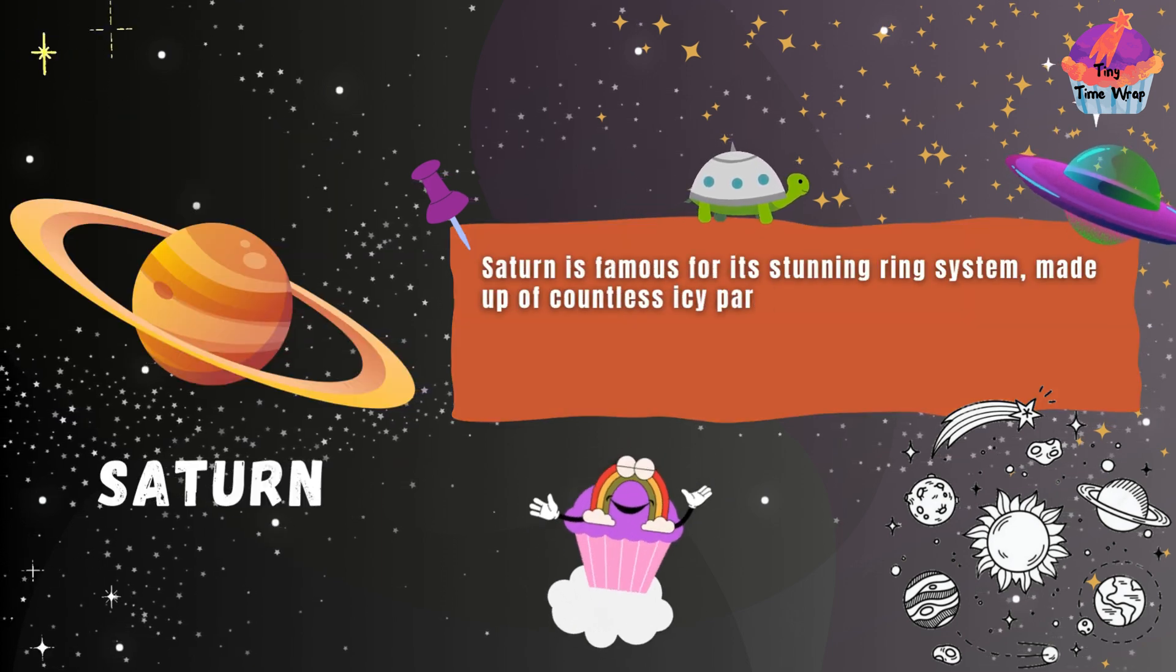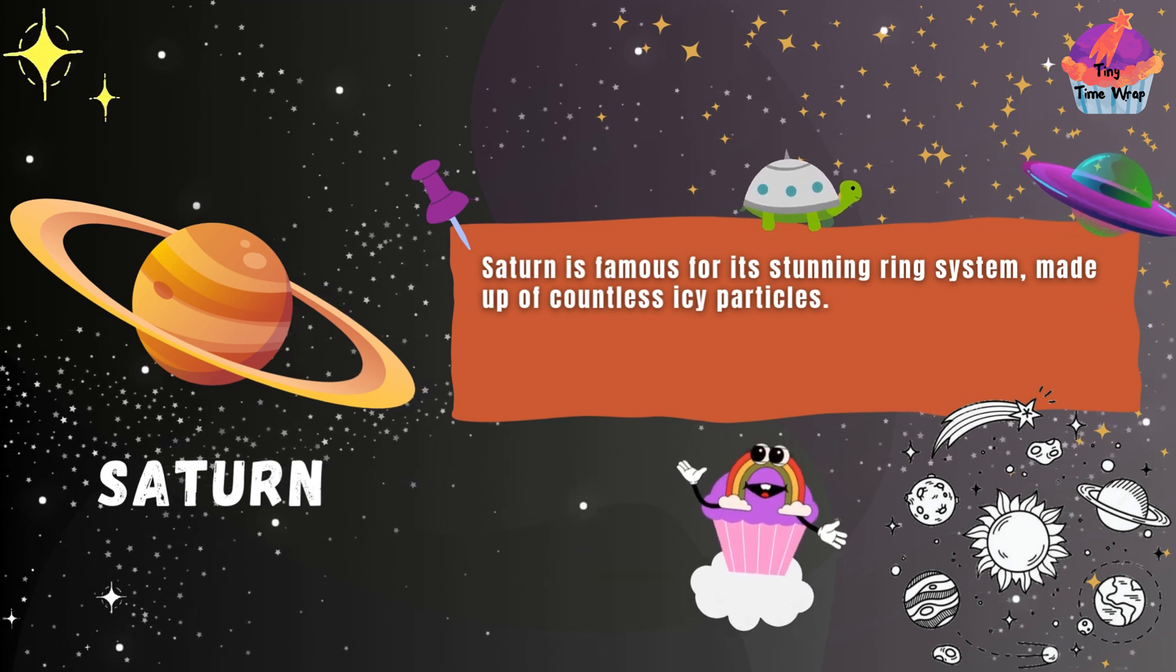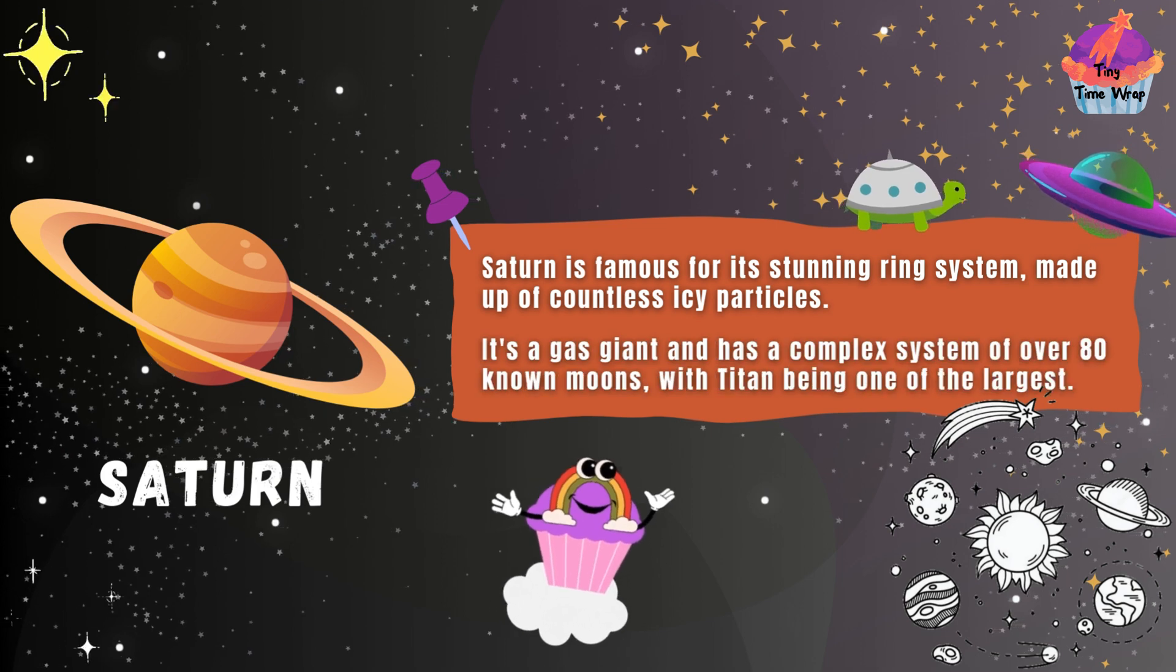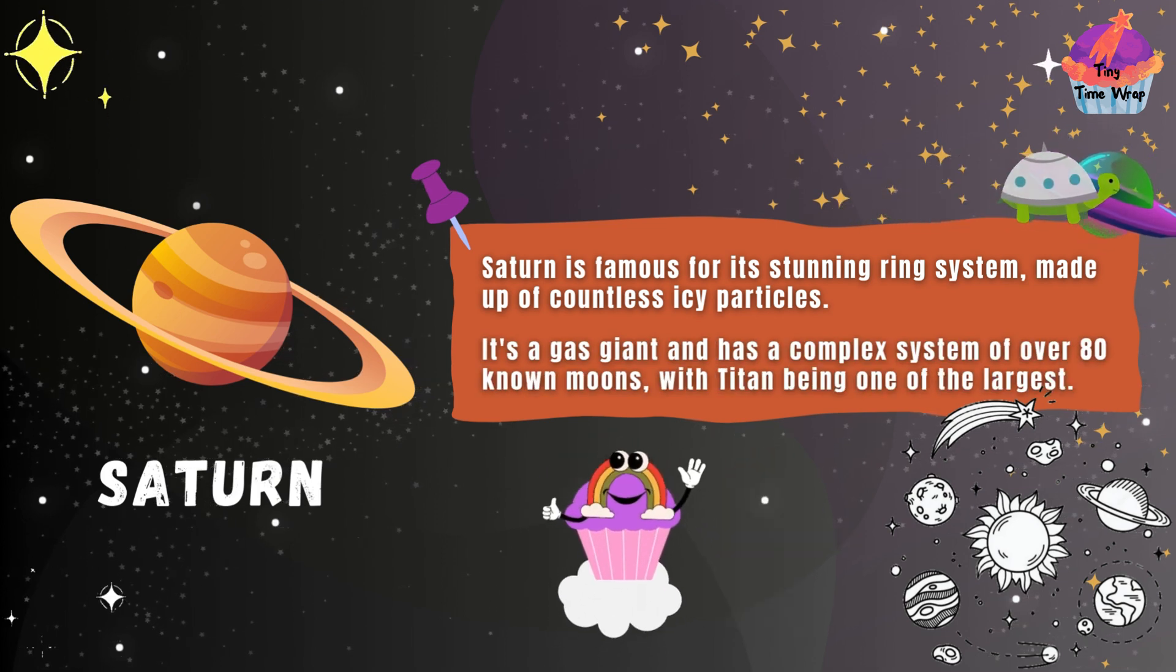Saturn is famous for its stunning ring system, made up of countless icy particles. It's a gas giant and has a complex system of over 80 known moons, with Titan being one of the largest.